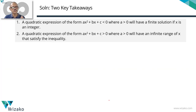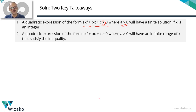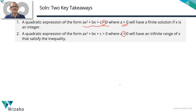Two key takeaways: First, for ax² + bx + c < 0 where the coefficient of x² (i.e., a) is positive, the solution set is finite when x is an integer. Second, for ax² + bx + c > 0 with positive leading coefficient, irrespective of whether x is an integer or not, you will have an infinite range of values satisfying it. Keep these two results handy — they let you solve any quadratic inequality in under 20 seconds.